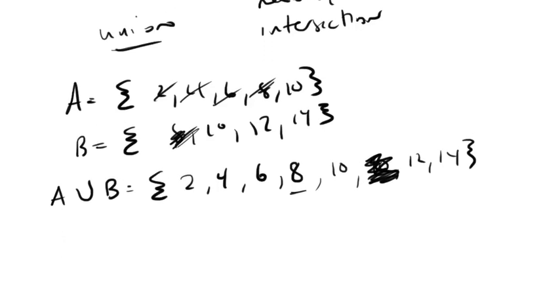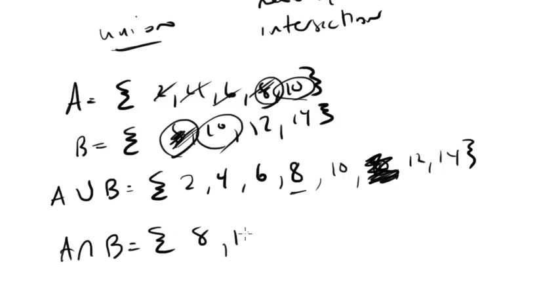An intersection would just be, OK, what do they have in common? So in this case, what do they have in common? Well, it would just be 8 and 8, 10 and 10. So the intersection, which is sometimes written like this, would just be 8 and 10.